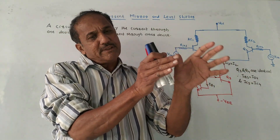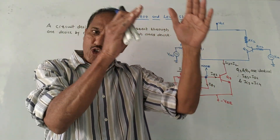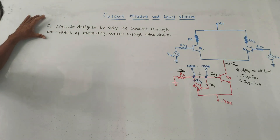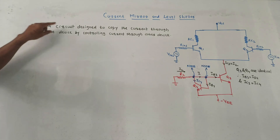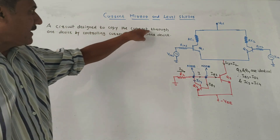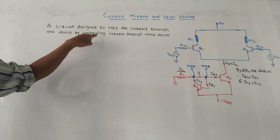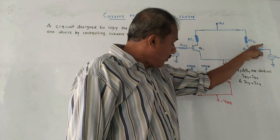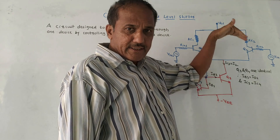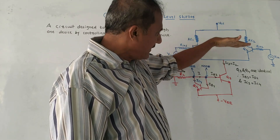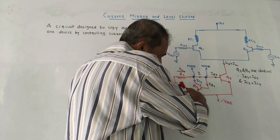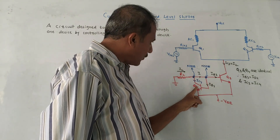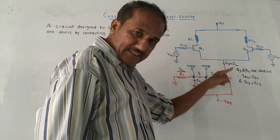As the name indicates, a current mirror is a circuit which makes the input current equal to the output current — that means the output current is a mirror image of the input current. The current mirror circuit can be defined as a circuit designed to copy the current through one device by controlling current to another device. This is the differential amplifier consisting of transistors Q3 and Q4.